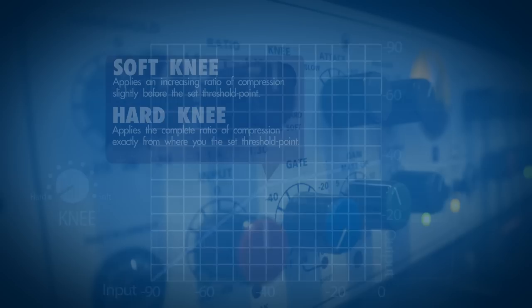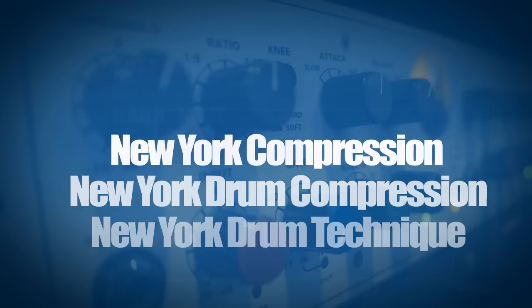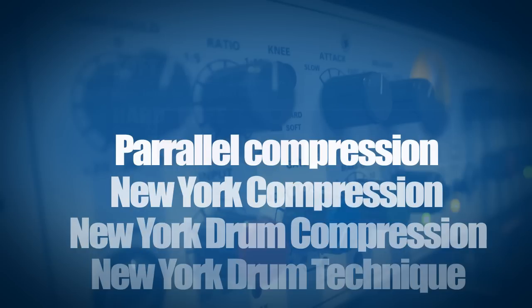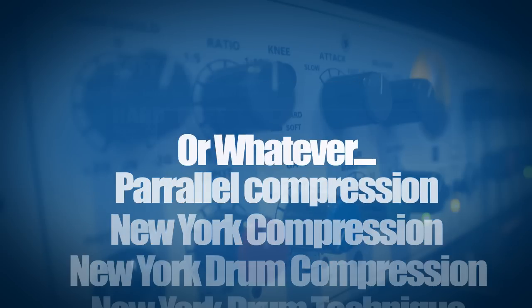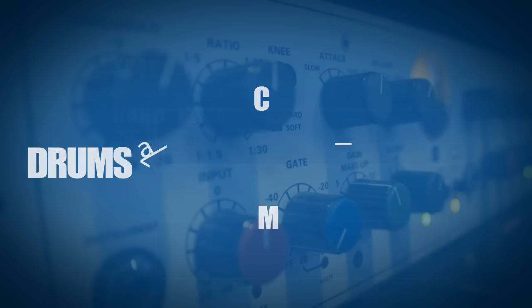A nice compression trick is the New York Drum Technique — also called New York Drum Compression, Parallel Compression, or whatever you call it. It uses a compressor and a dry signal at the same time. We combine the original drum track with the heavily compressed drums to give it more body. Let's listen to the original drums first, then the compressed track, and then the combination — the New York Drum Track.